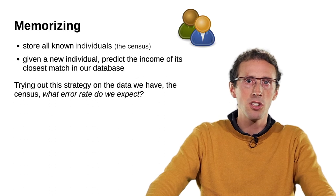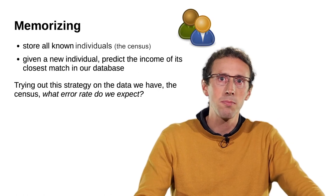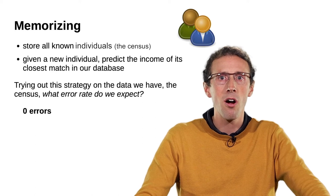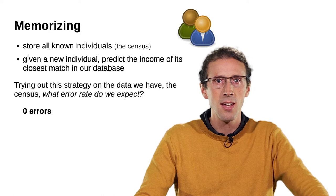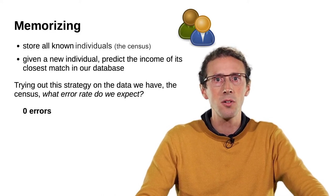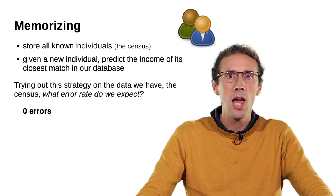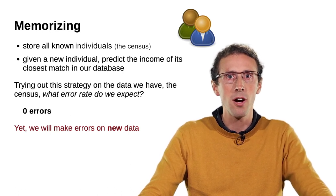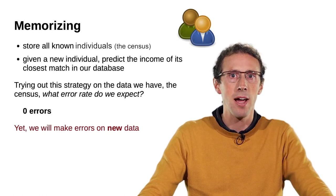If we try this strategy on the data we have, the census, what error rate do we expect? Each individual for which we are asking a prediction is in our database. Thus, its closest match will be itself, and as a consequence, we will have zero prediction error. However, if we try our strategy on unseen data, we will not be able to find an exact match. Hence, it is likely to make some errors.